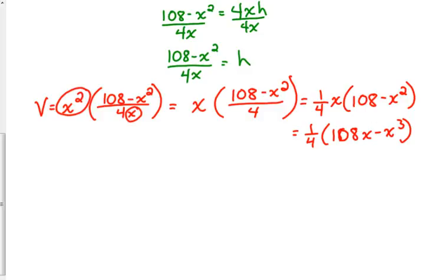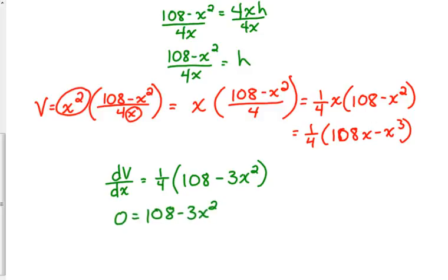All right. Now we're going to take the derivative. The derivative of the volume with respect to this variable X, the length of the base, is equal to. That 1/4 is a constant multiple. So take the derivative of what's on the inside of those parentheses. The derivative of 108X is 108. The derivative of negative X cubed is negative 3X squared. They're trying to maximize the volume. So that's where the derivative equals zero. So 1/4 doesn't equal zero. The only piece that can equal zero is the 108 minus 3X squared. So I'm going to add the 3X squared to make it positive. Divide by 3. 3X squared is equal to 3 goes into 336. And then take the square root.